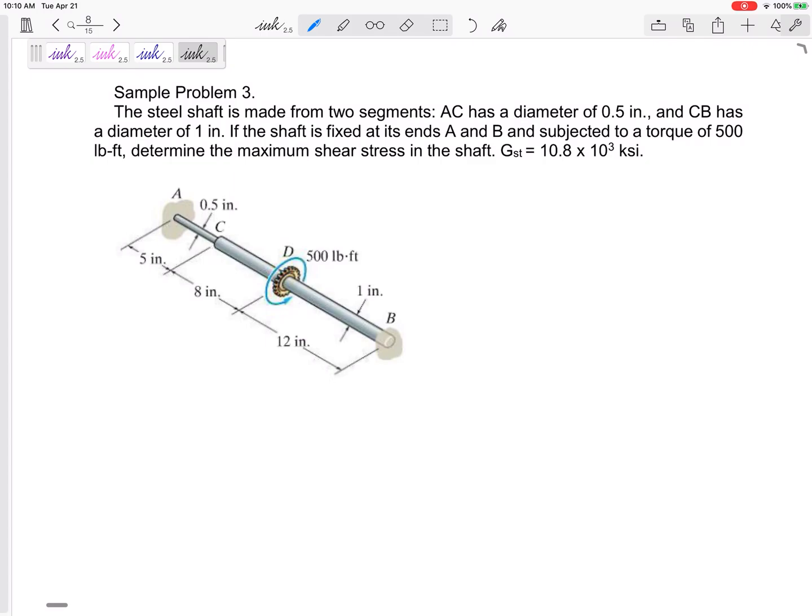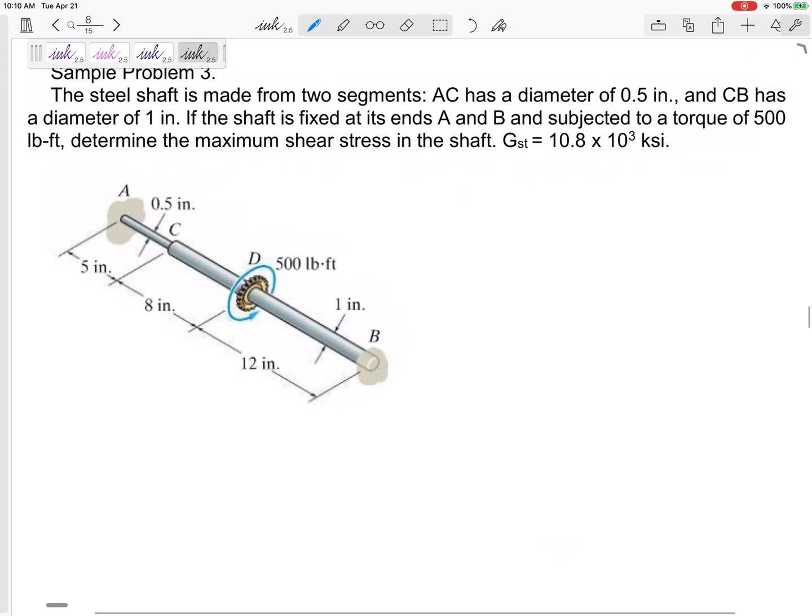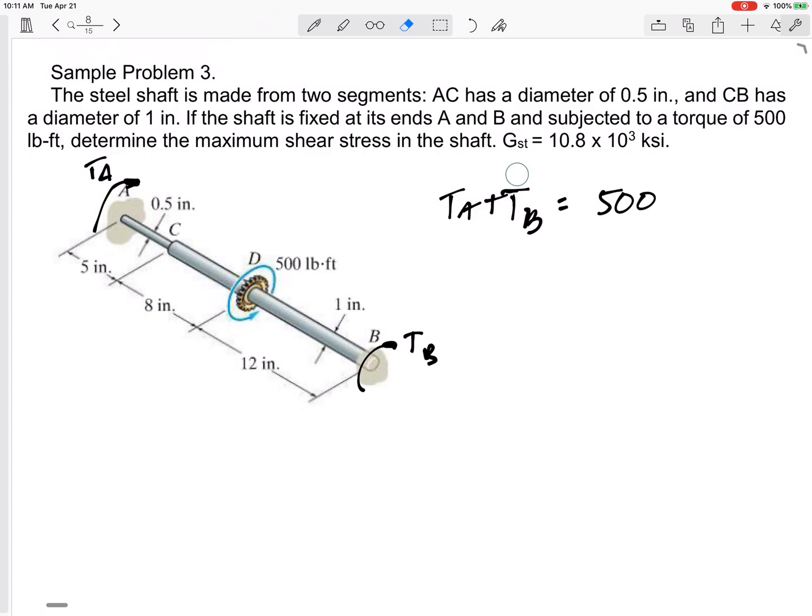Okay. All right, so from statics, if this is going over that way, then I've got a torque at B and I've got a torque at A. TA plus TB are going to counteract, are going to add up to that 500. That's really from summing the moments. TA plus TB are going to add up to 500 pound feet. But that's not enough. I don't know if it's 100 and 400, I don't know if it's 250 and 250. That's not enough. I need another equation.